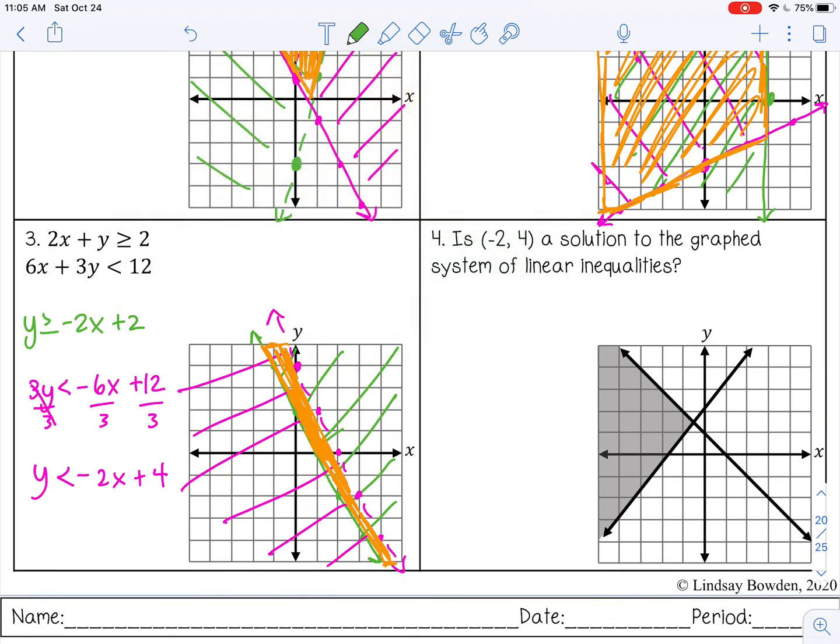Alright, and then number 4, is negative 2, 4 a solution to the graphed system of linear inequalities. Okay, so negative 2, 4 is here, and as you can see, it lies outside the shaded region, so no, it is not a solution. It has to be somewhere in here to be a solution.